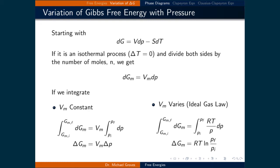If the molar volume varies significantly, as for a gas, and assuming ideal behavior, we substitute the ideal gas law for the molar volume before integrating. This results in the change in molar Gibbs free energy being equal to RT times the natural logarithm of the final pressure divided by the initial pressure.